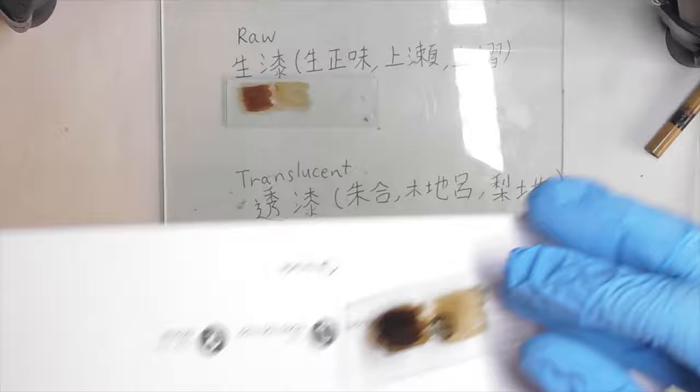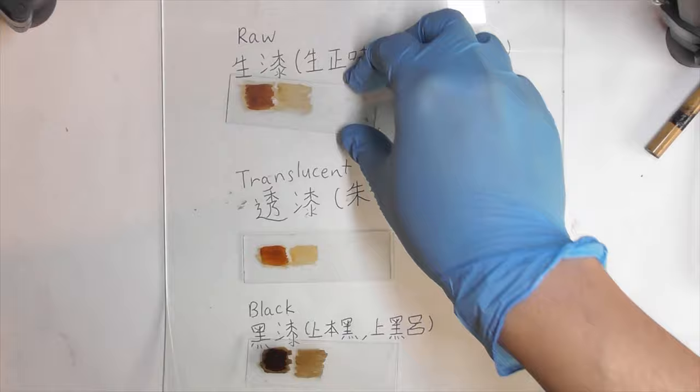By lowering the curing temperature and humidity to 19 degrees Celsius and 70% humidity, the color of cured Urushi is lighter.